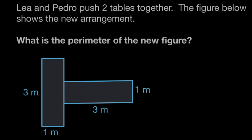Lea and Pedro push two tables together. The figure below shows the new arrangement. So we have table number one and table number two that Lea and Pedro have pushed together. Maybe they're having a bunch of people over for a fancy breakfast, and so they've pushed two tables together to have a lot of room for people to sit.